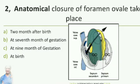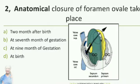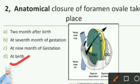Anatomy: closure of foramen ovale takes place. Option A: 2 months after birth. Option B: at 7 months of gestation. Option C: at 9 months of gestation. Option D: at birth. The answer is option B.